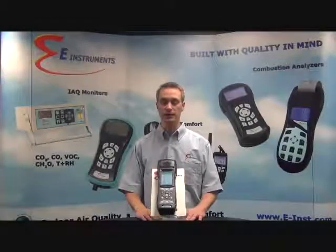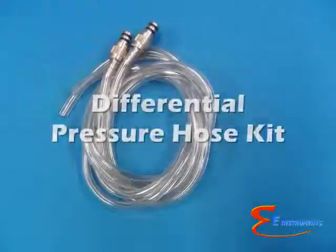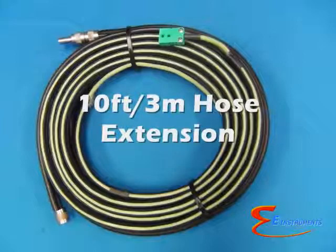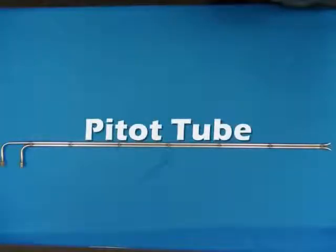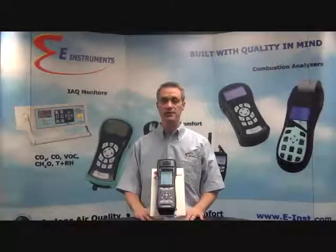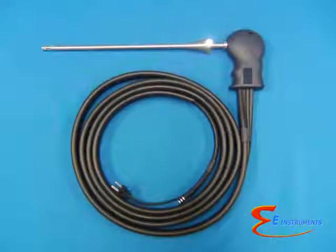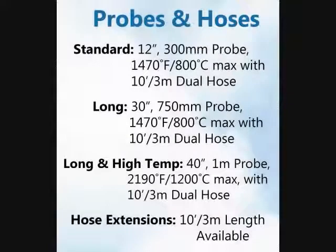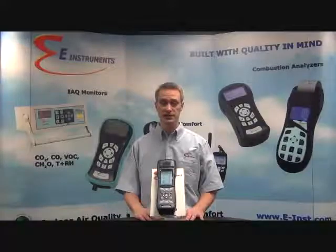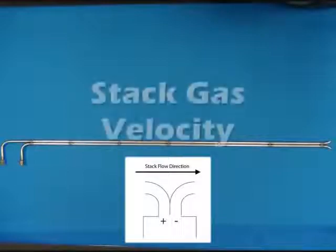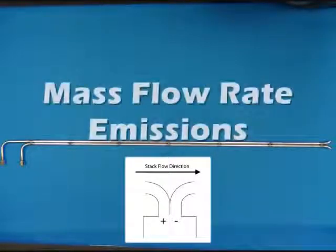Optional items that can be used with the E-4500 include a differential pressure hose kit, DC automobile charger, a 10-foot (3-meter) hose extension for use with tall or hard-to-reach stacks, and a pitot tube for stack gas velocity measurements. The standard gas sampling probe is a 12-inch (300 mm) long probe rated up to 1,470°F (800°C) and includes a 10-foot (3-meter) dual hose. Longer and higher-temperature probes and hose extensions are also available. An optional 36-inch (900 mm) S-type pitot tube can be used to measure stack gas velocity and allow for calculations of mass flow rate emissions.